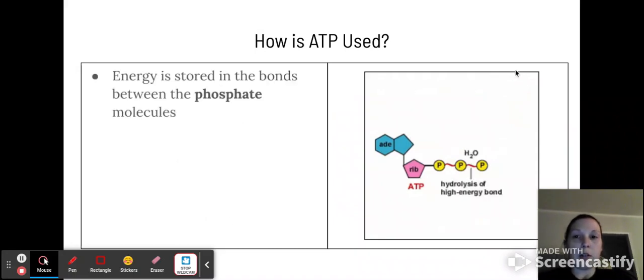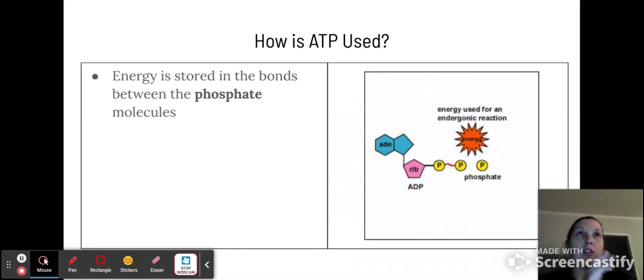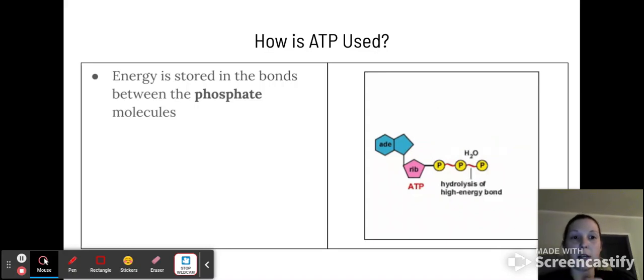So how is ATP used? The energy that we get from ATP is actually stored in the bonds between the phosphate groups. So it's a triphosphate, which means there are three of them there. When you break a bond between two of the phosphates, that release of energy is what the body uses.